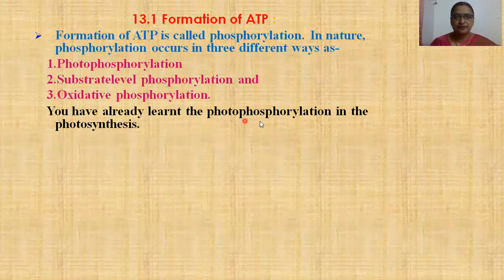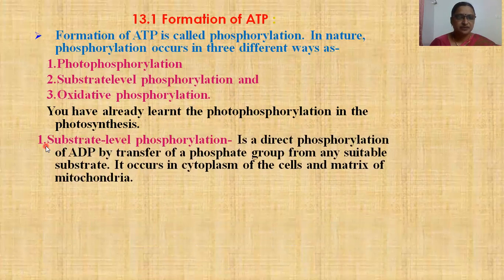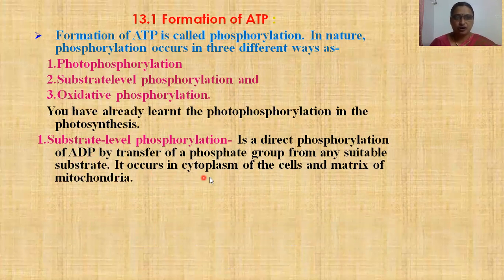You have already learnt about phosphorylation in photosynthesis. Substrate-level phosphorylation is a direct phosphorylation of ADP by transfer of a phosphate group from any suitable substrate. The long form of ADP is adenosine diphosphate. Substrate-level phosphorylation occurs in the cytoplasm of cells and the matrix of mitochondria.